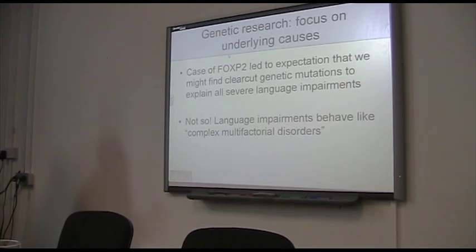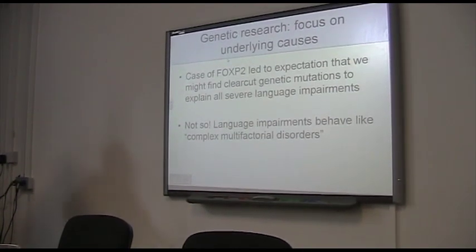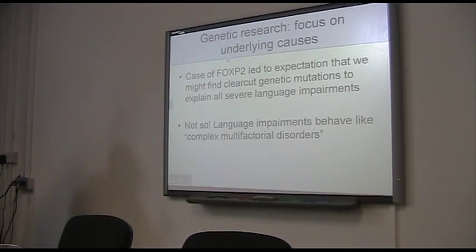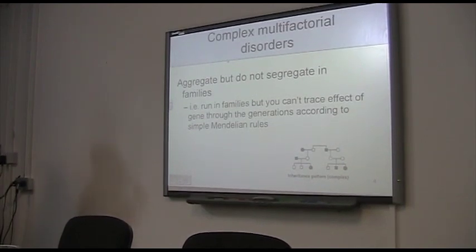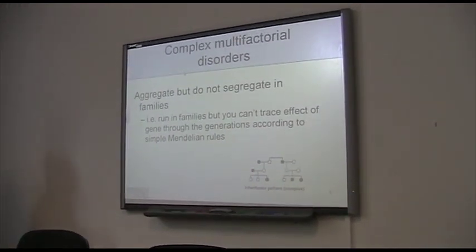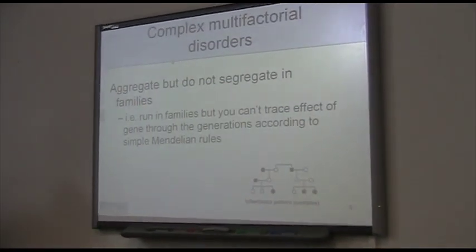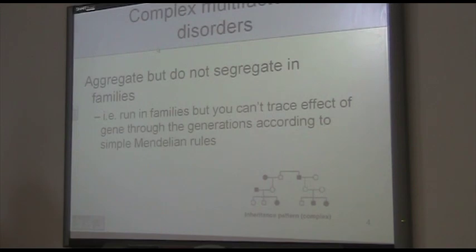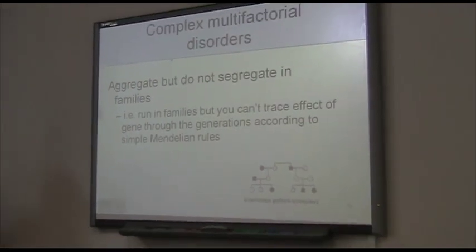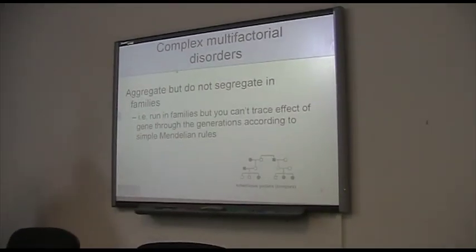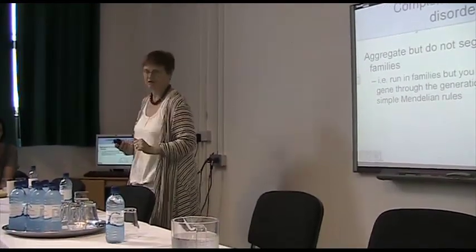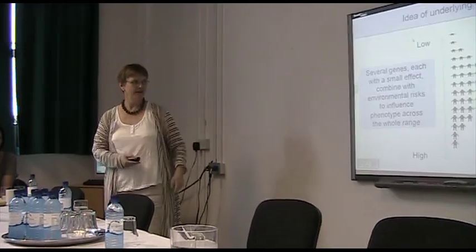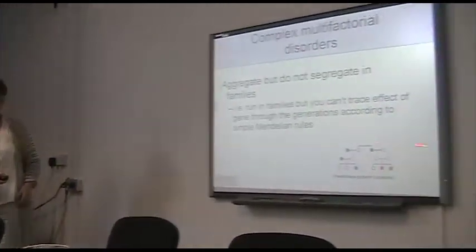Instead, what we seem to be concluding about the remaining huge number of children who have these problems is that they are what are called complex multifactorial disorders, which means they don't have a simple, straightforward etiology. The nice way of phrasing it — which I find rather memorable — is that they aggregate but do not separate through families. This simply means that if you have a disordered child, their relatives are more likely to have the same type of problem than the general population, but you can't trace it as a simple inherited pattern. It's not Mendelian — it doesn't obey the classic laws of genetics. You get something much more messy, like this family tree here.